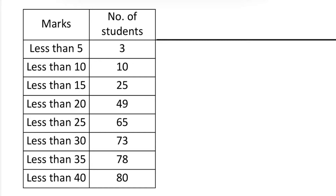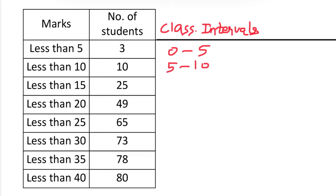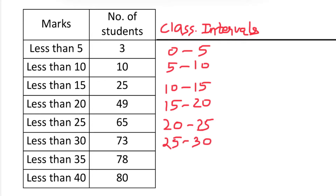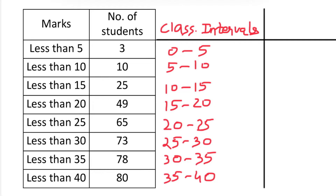The first thing we need to do is convert this cumulative frequency distribution into class interval form. The gap of five is given, so the class intervals will be: 0 to 5, 5 to 10, 10 to 15, 15 to 20, 20 to 25, 25 to 30, 30 to 35, and the last one will be 35 to 40.